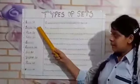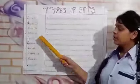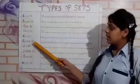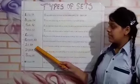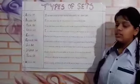There are ten types of sets. First is Empty Set, second Singleton Set, third Finite Set, fourth Infinite Set, fifth Equal Set, sixth Equivalent Set, seventh Subset, eighth Disjoint Set, ninth Power Set, and tenth Universal Set.